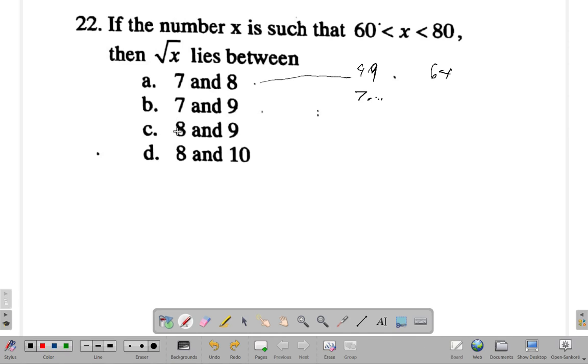It's lower than 8. So it cannot be between 8 and 9. So, obviously, C and D are out. It's either A or B. Let's see. The square root of 60 is 7 point something. So, it's between 7 and... Let's see what happened here.